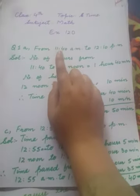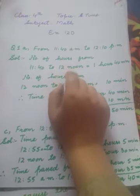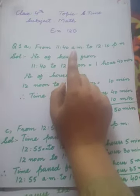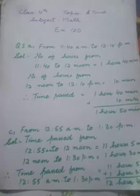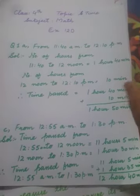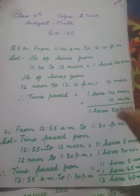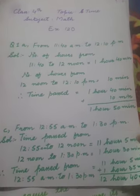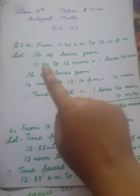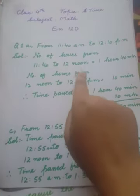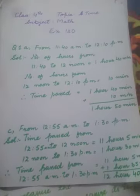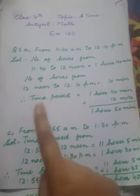From 11:40 to 12:00 — how many hours have passed? And then from 12:00 to 12:10 — how many hours have passed? After finding both, we will add them together. See what I have written: the number of hours from 11:40 to 12:00 noon is 20 minutes, and the number of hours from 12:00 noon to 12:10 PM is 10 minutes.